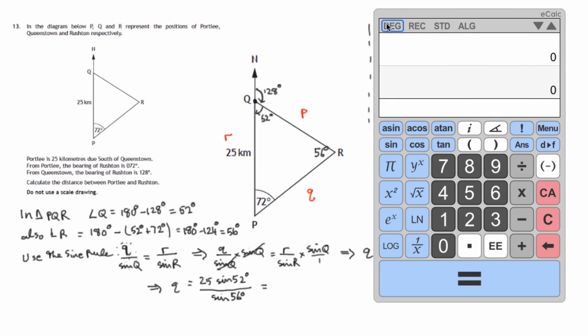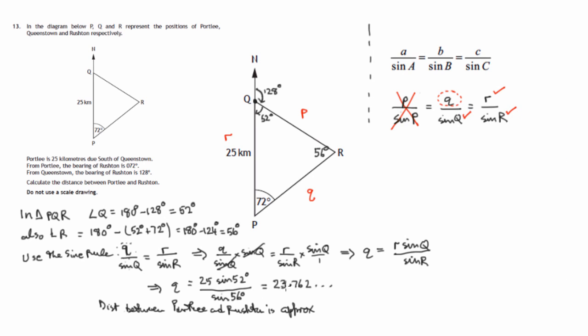Always check your calculator has Deg or D on display. Otherwise the signs will calculate wrongly. So 25 times sine of 52 divided by sine of 56. And that comes to 23.762 and so on. So distance between Portly and Rushton is approximately 23.8 to one decimal place.